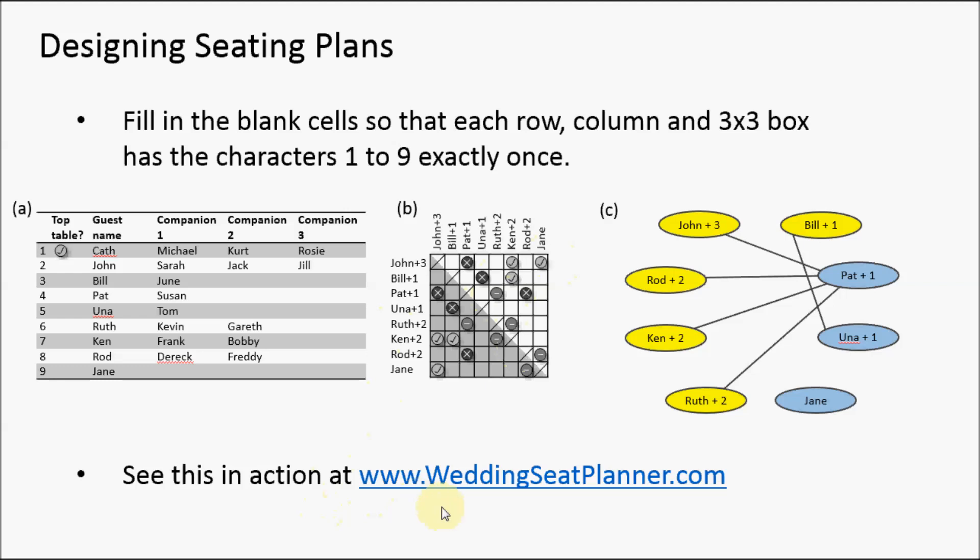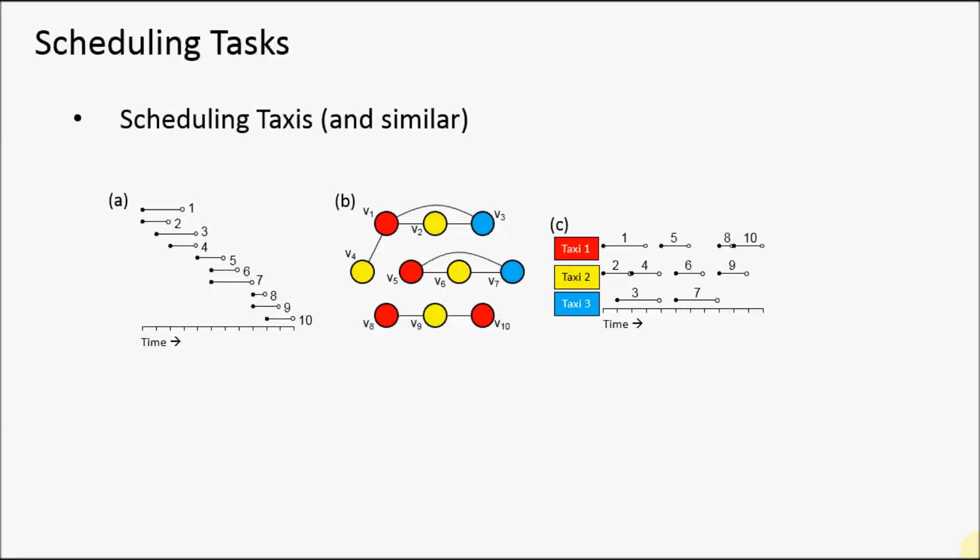Graph coloring can also be used to schedule tasks that occur over time. Let's think about this in terms of scheduling taxi journeys. In this figure, we have a series of taxi journeys with a start time and an end time.